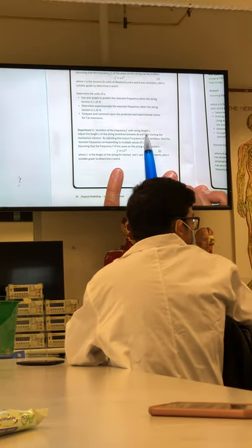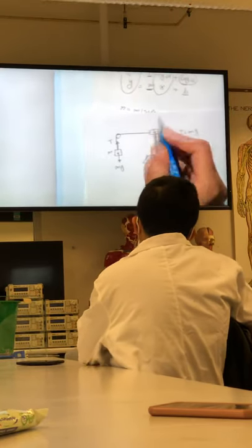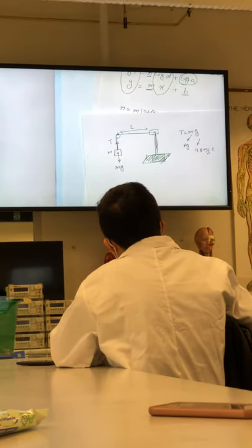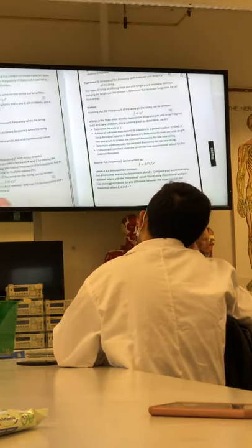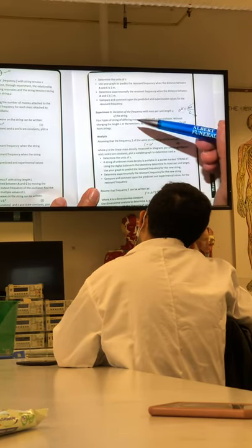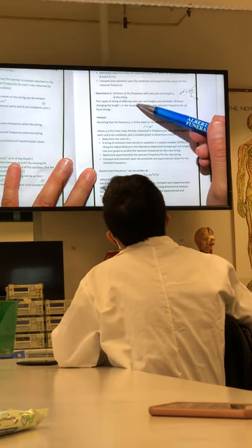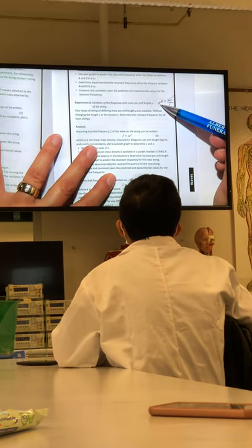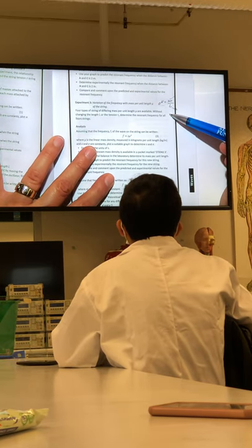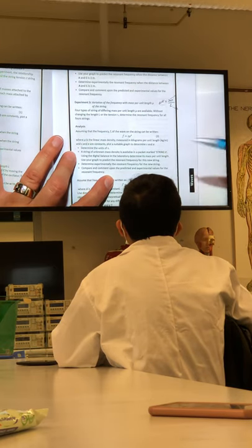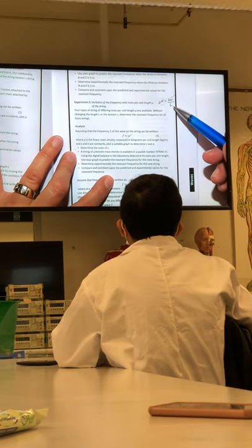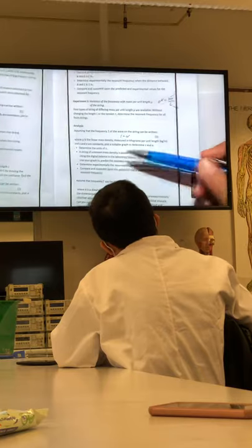The variation of frequency with string length means you change the length from the actuator to the fixed end — that is your variable. Again, you have some experimental measurements to complete before packing. The last part is the variation of frequency with mass per unit length, which we call mu (μ = mass/L). Pick specific strings, measure their length and mass, calculate mu, and use that in the formula.